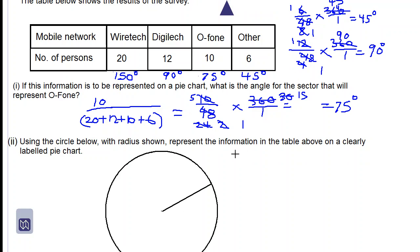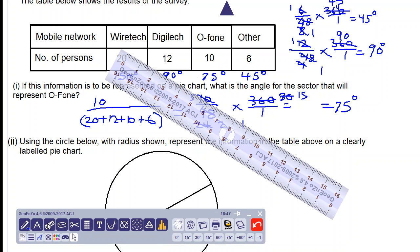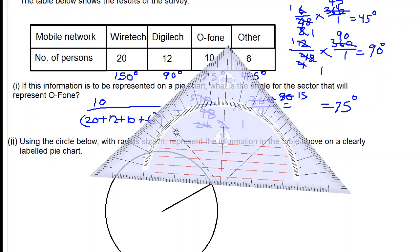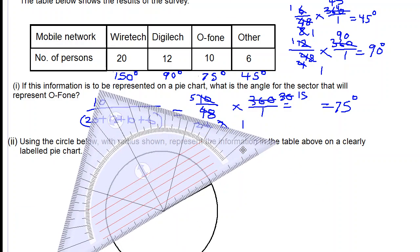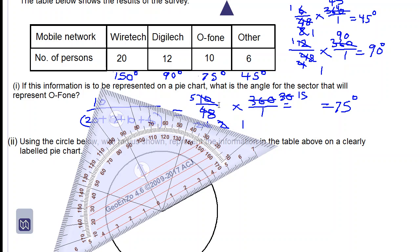So now we have to represent these angles on this pie chart, and we need to get a protractor. This is my version of a protractor, which I will use.